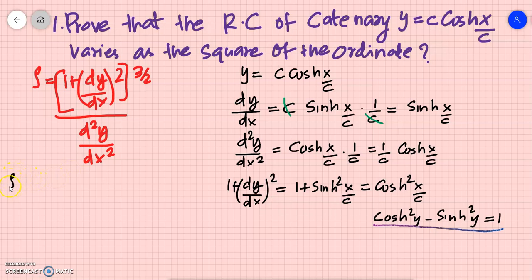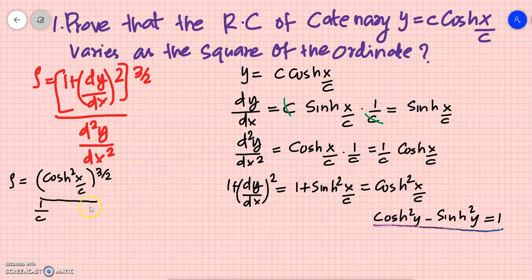So substituting: rho equals [1 + (dy/dx)²]^(3/2) divided by d²y/dx², which becomes cosh²(x/c) raised to 3/2, divided by (1/c)·cosh(x/c).